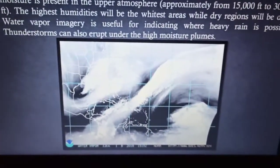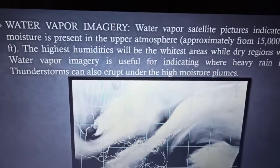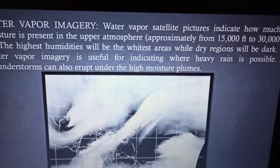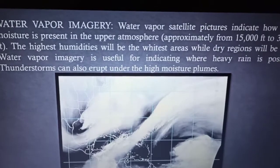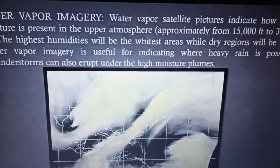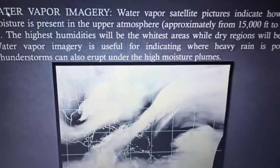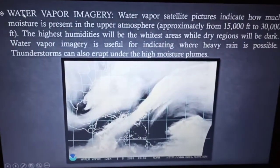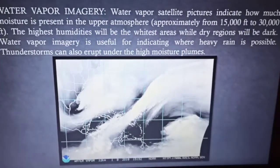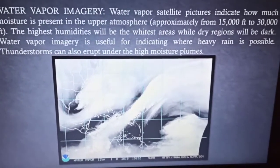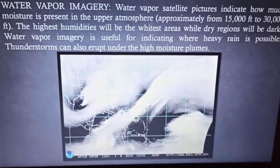The last type is the water vapor imagery. Water vapor satellite pictures indicate how much moisture is present in the upper atmosphere, approximately from 15,000 feet to 30,000 feet. The highest humidity will appear as the whitest area, while dry regions will be dark. Water vapor imagery is useful for indicating where heavy rain is possible, and thunderstorms can also develop under high moisture planes.